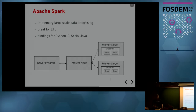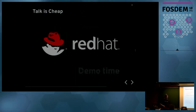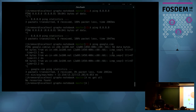Spark also supports off-heap memory. The architecture has something called a driver program that holds the application and communicates with the master node, which coordinates all the workers and schedules work to those executors. An executor runs on a worker node and runs those tasks. Talk is cheap — let's do the demo.